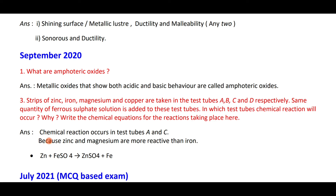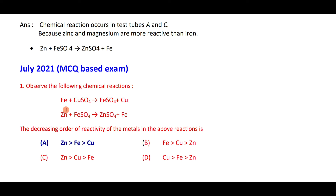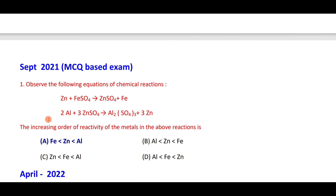Zinc and magnesium are more reactive than iron, hence they displace it. Equation: Zn plus FeSO₄ gives ZnSO₄ plus Fe. From the given reactions, the decreasing order of reactivity is Zn, Fe, and Cu — option E. The increasing order of reactivity is Fe, Zn, and Al — option E.